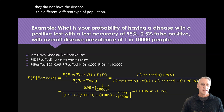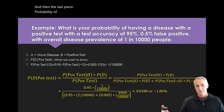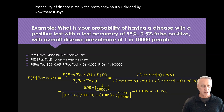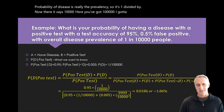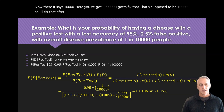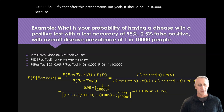The last piece is the probability of disease, which is really the prevalence — 1 divided by 10,000. There was a typo in the slide showing 100,000, but all calculations use 1 in 10,000, which is the correct value.